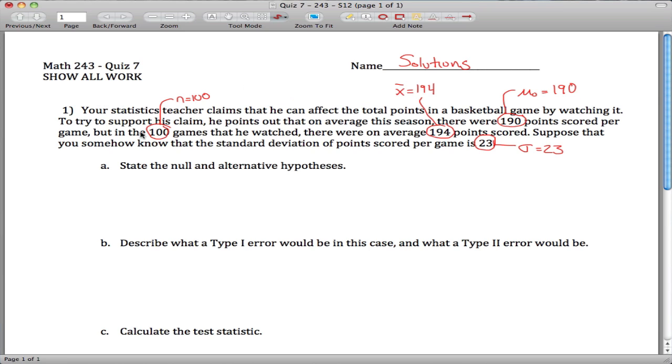And mu, let's see, maybe I'll write this down here. Mu is the average points scored in all games that I would watch, in all games. So we're talking about a population parameter here. So I'm wording that kind of awkwardly, but what I mean is not just these 100 games, but all games. If I watched, on average, any game that I watch, what that average should be.